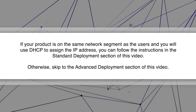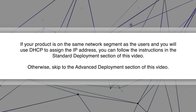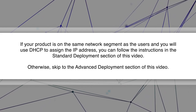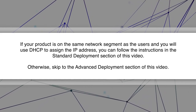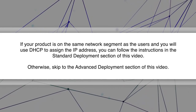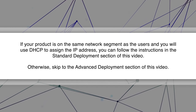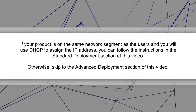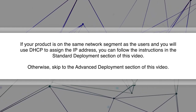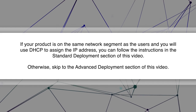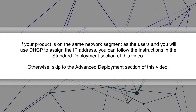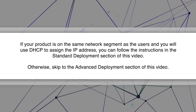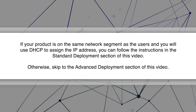If your product is on the same network segment as the users and you will use DHCP to assign the IP address, you can follow the instructions in the standard deployment section of this video. Otherwise, skip to the advanced deployment section of this video.